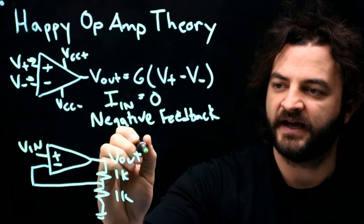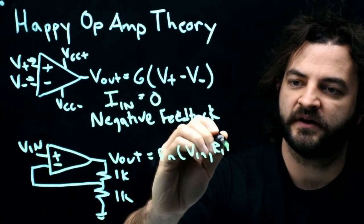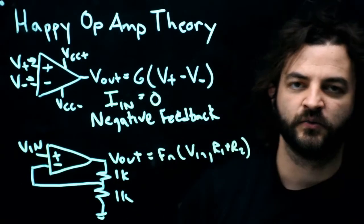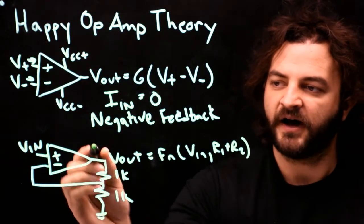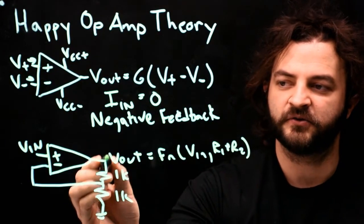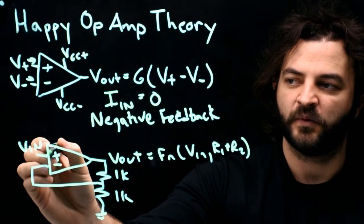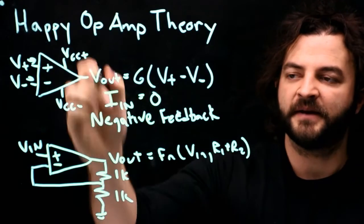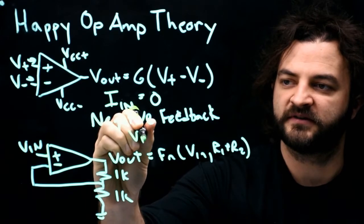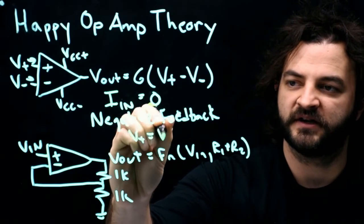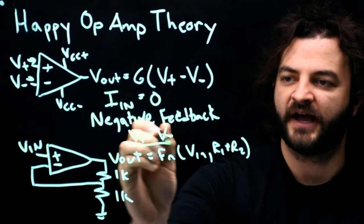Now what I expect is V out is going to be something that's a function of V in. And we'll call them R1 and R2, my two 1k resistors. Before, we saw something weird is going to happen where the op-amp is going to either go towards plus five or go down towards minus five as it tries to figure out what to do with its two inputs. Happy op-amp theory says when we're in negative feedback, the two inputs, the non-inverting input and the inverting input, will be equal. This is the main rule for happy op-amp theory.